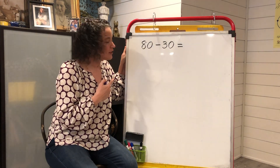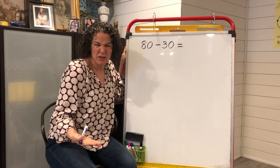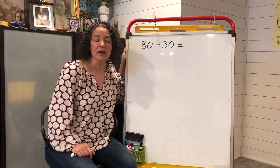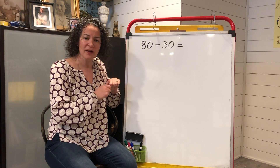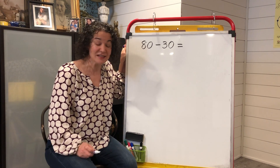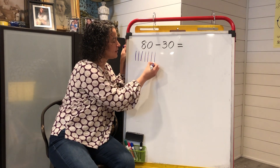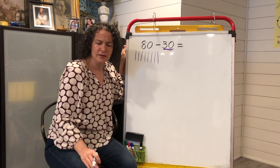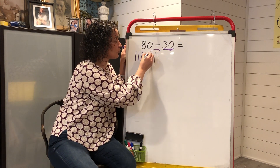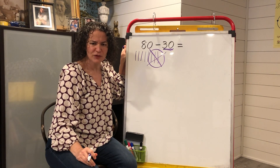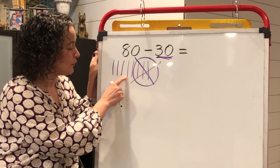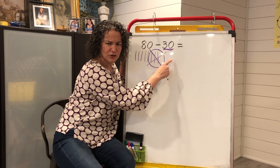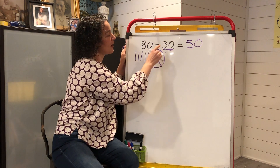All right, my friends, we've got our second problem: 80 minus 30 equals what? If you're doing the quick pick in your head, that's fabulous, but help me — I've got to draw a quick pick. How many tens are in 80? Eight. I need eight tens: 10, 20, 30, 40, 50, 60, 70, 80. I'm subtracting, so I'll circle and cross out three tens. How many tens are in 30? Three. Let's count up what's left: 10, 20, 30, 40, 50. So 80 minus 30 equals 50.